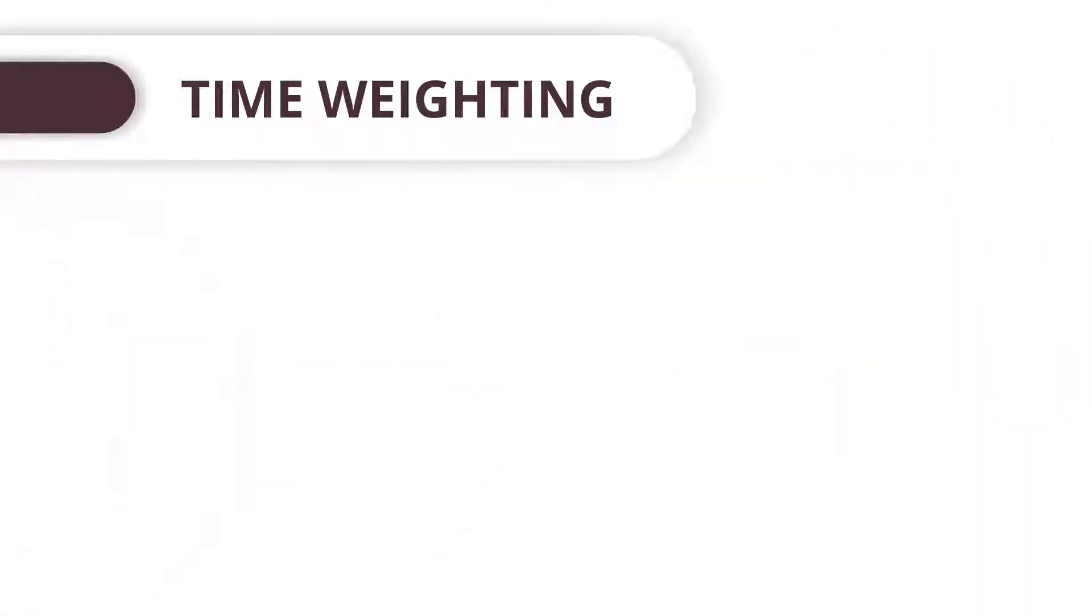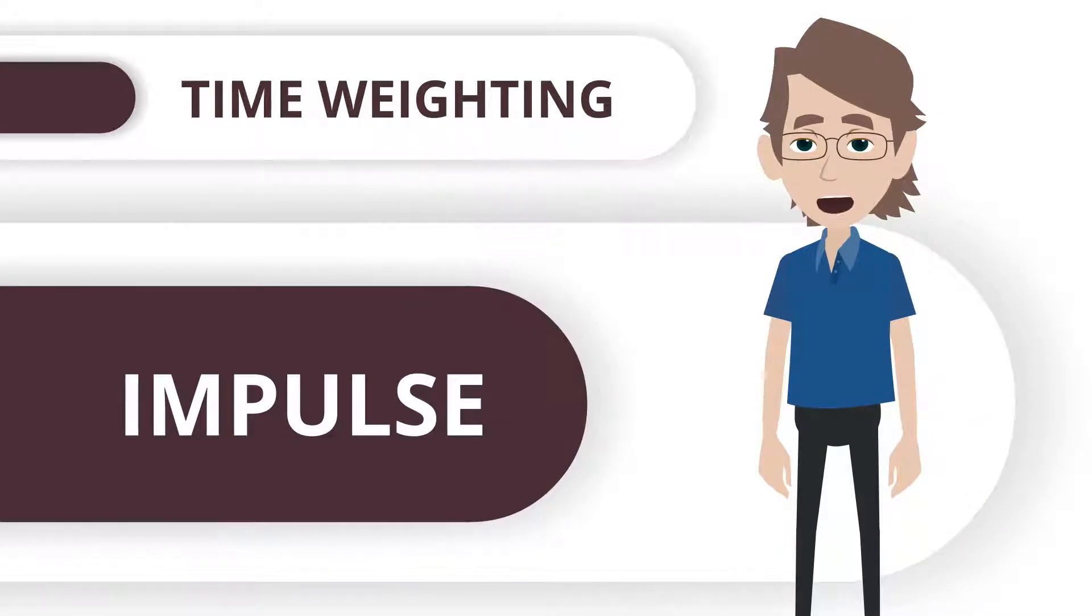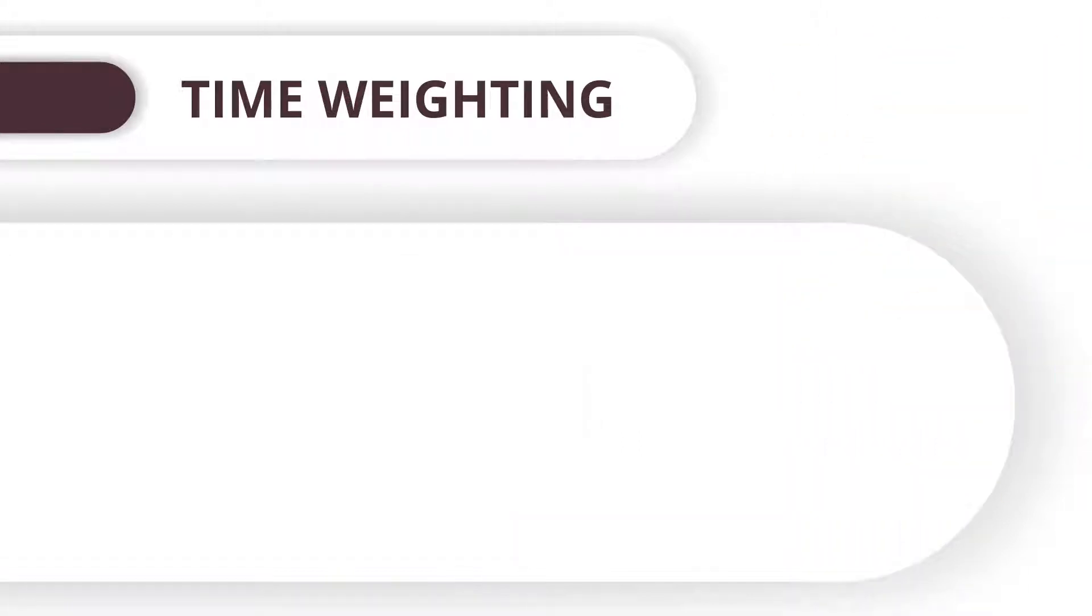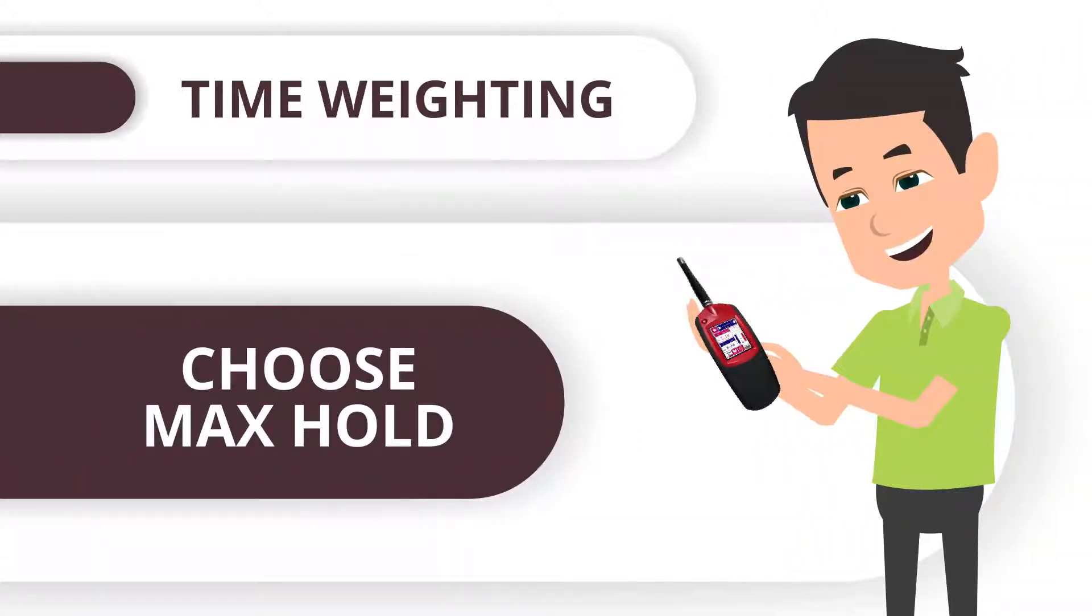A time weighting called impulse, which is not used very often anymore, measures across even shorter time frames than fast. Choose max hold if you want the meter to lock on to the highest values that it measures.